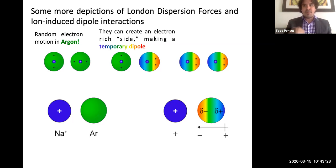But one side has a partial negative and a partial positive charge. Now, if that temporary dipole interacts with another argon, for example, the electron rich side is going to repel electron density away from it, whereas the electron poor side is going to pull electron density toward it.